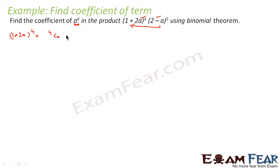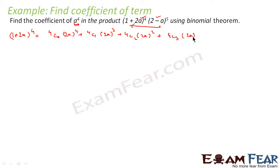Expanding (1+2a)⁴ gives: 4C0·(2a)⁴ + 4C1·(2a)³ + 4C2·(2a)² + 4C3·(2a)¹ + 4C4·(2a)⁰. Now 4C0 is 1 and (2a)⁴ is 16a⁴. 4C1 is 4 and (2a)³ is 8a³, giving 32a³.